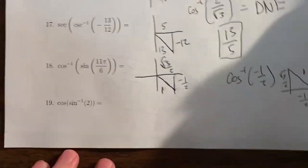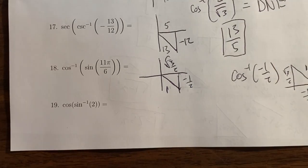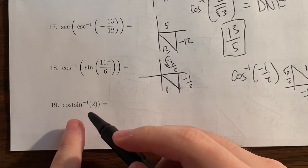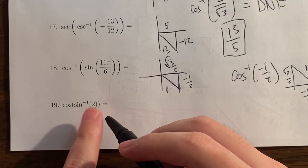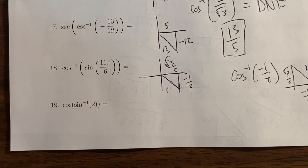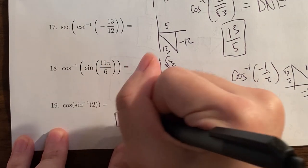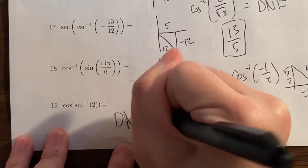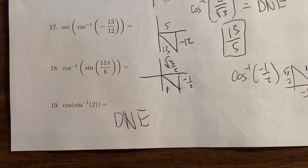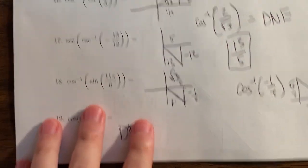The last question is actually a trick question: cos(arcsin(2)). You cannot find arc sine of 2, because there are no angles whose sine is 2 — no point on the unit circle has a y-coordinate of 2. So the answer is does not exist. We don't even need to find the cosine because arc sine of 2 is undefined.